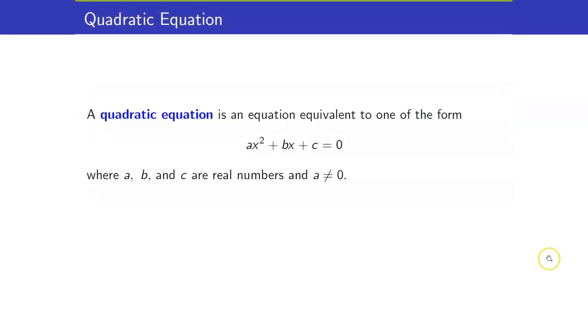A quadratic equation is an equation equivalent to one of the form ax squared plus bx plus c is equal to 0, where a, b, and c are real numbers, and the coefficient of x squared is not equal to 0.